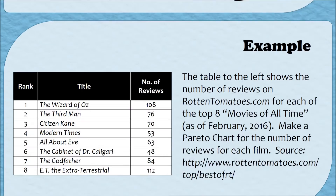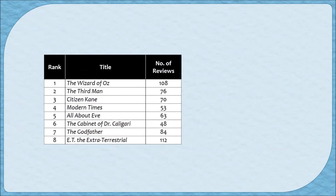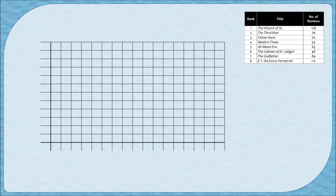Let's make a Pareto chart. In this example we've been given the top eight movies of all time on RottenTomatoes.com from February 2016 and we've been asked to make a Pareto chart for the number of reviews for each film. The table has three columns: rank, title of the movie, and number of reviews. For our Pareto chart we're only going to use the last two columns, organizing each title based on how many reviews it received.